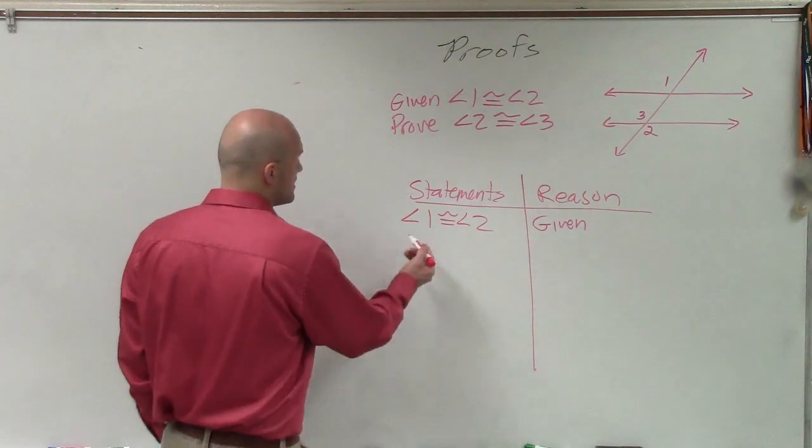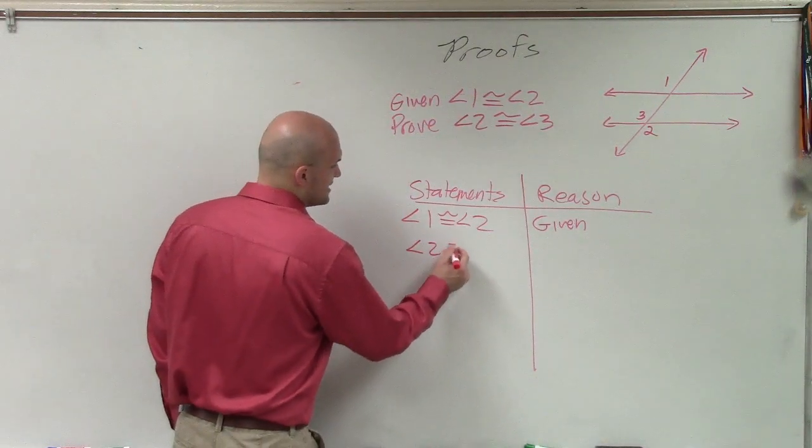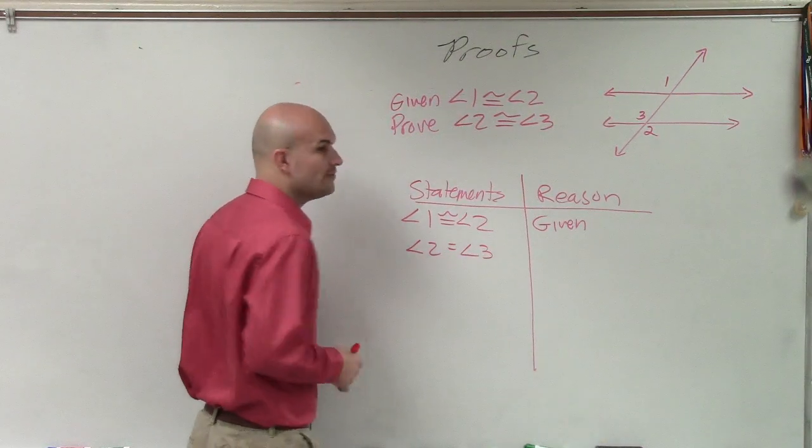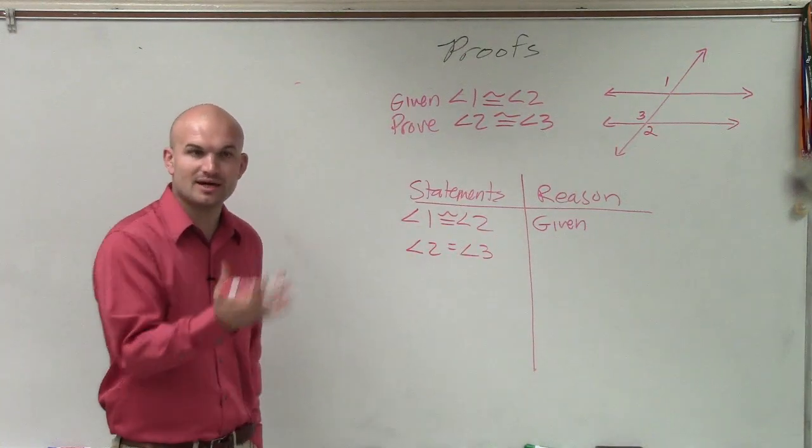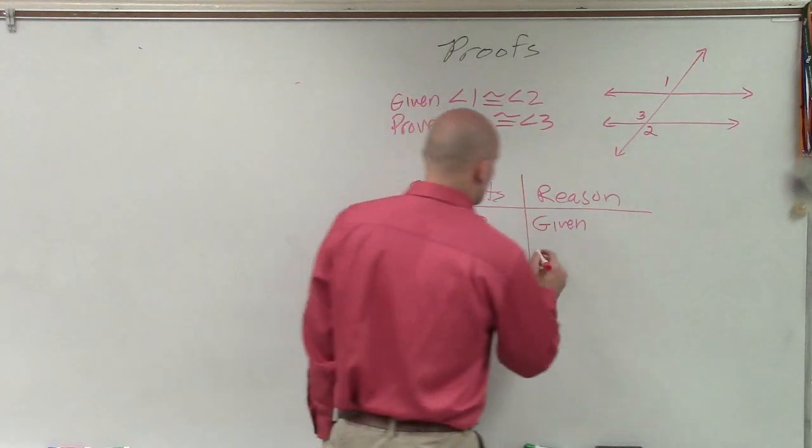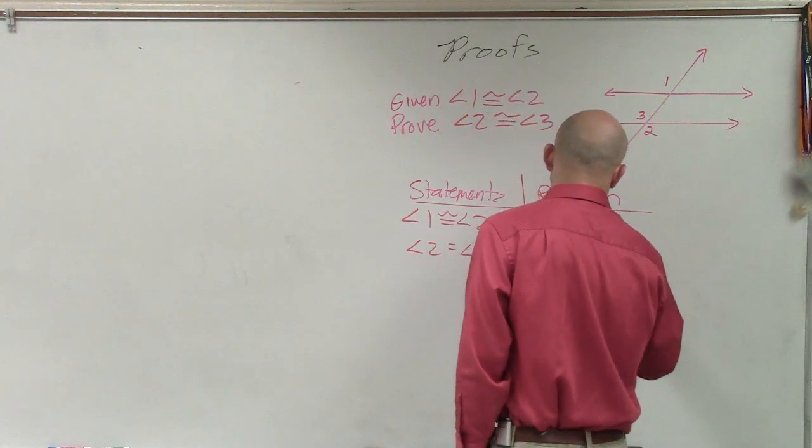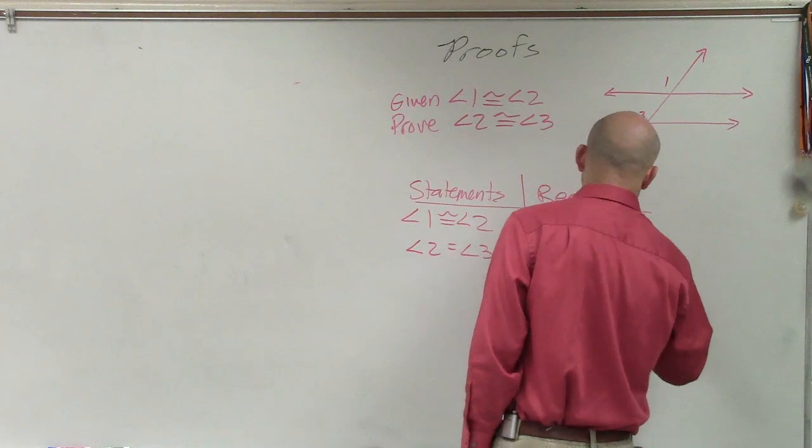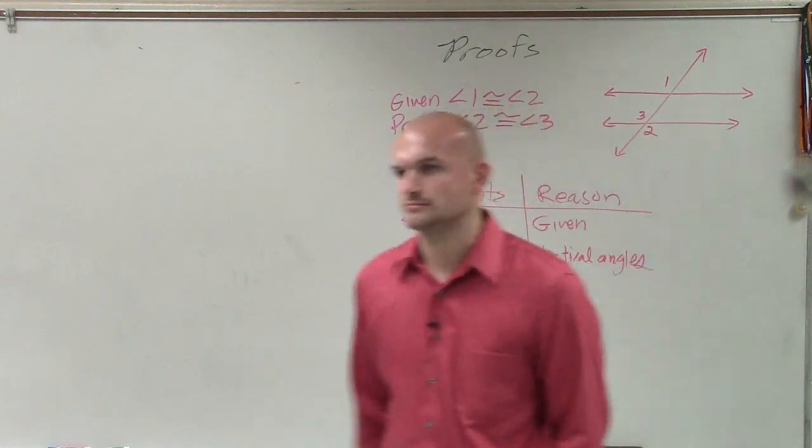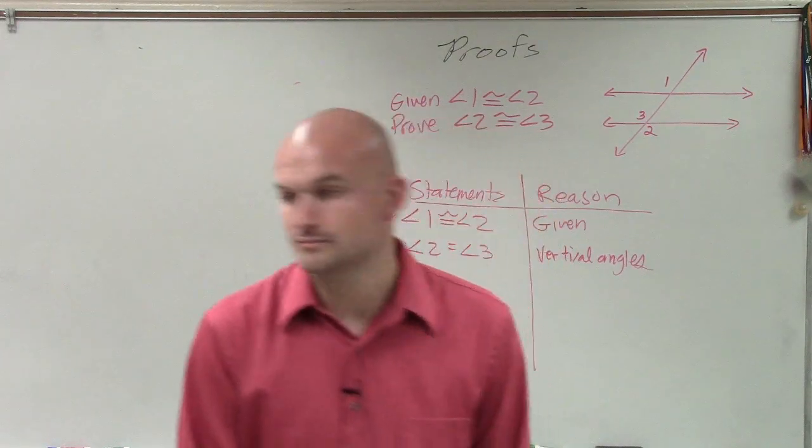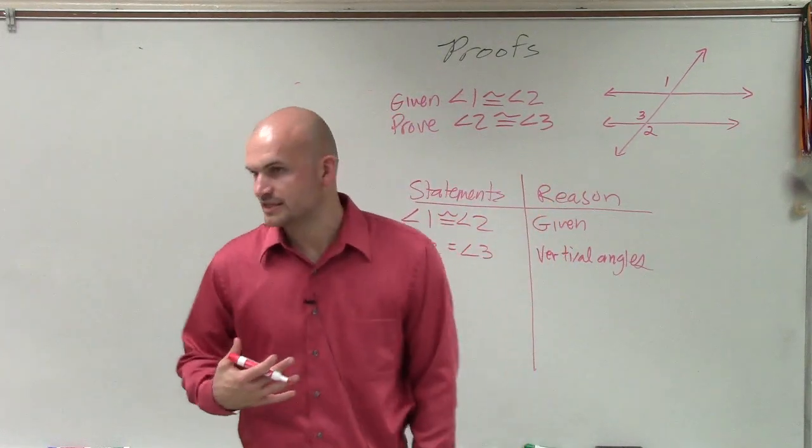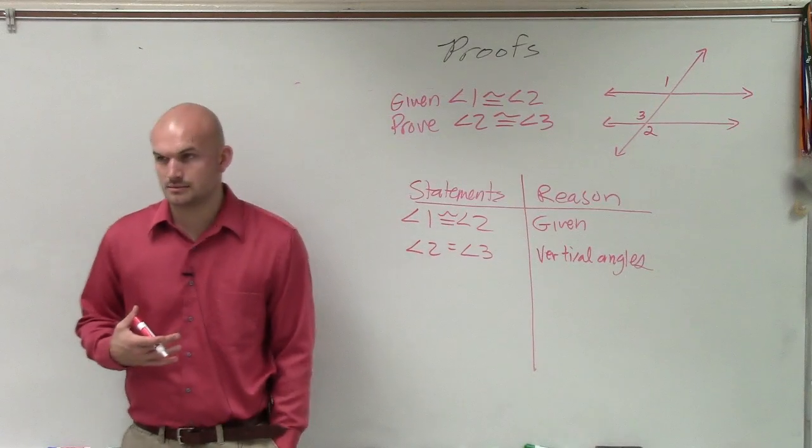So what I can say is, angle two is equal to angle three. And why are they equal? They're equal because the definition of vertical angles. Everybody understand that?